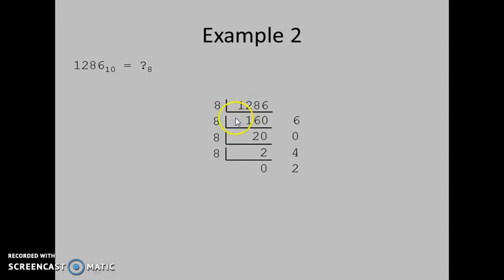Therefore, 1286 divided by 8 equals 160 with remainder 6. 160 divided by 8 is 20 with remainder 0. 20 divided by 8 equals 2 with remainder 4. And 2 divided by 8 is 0 with remainder 2.